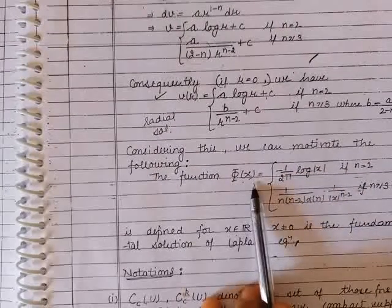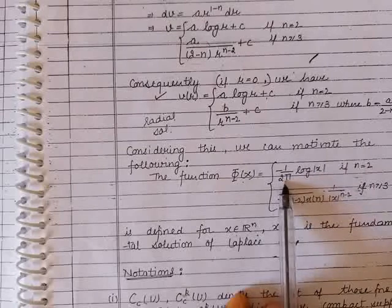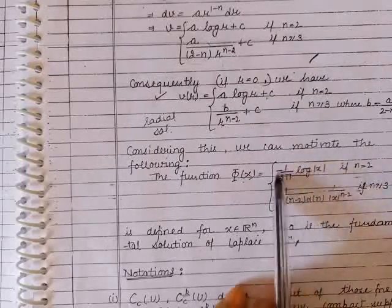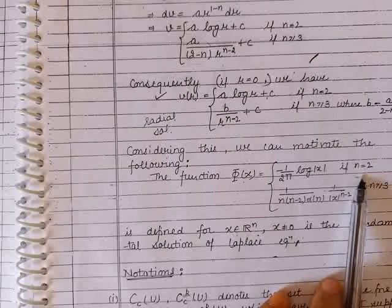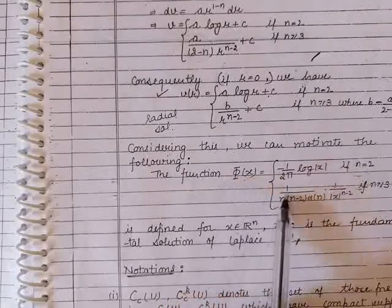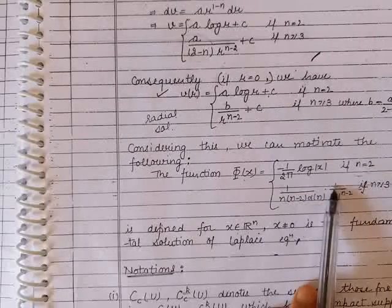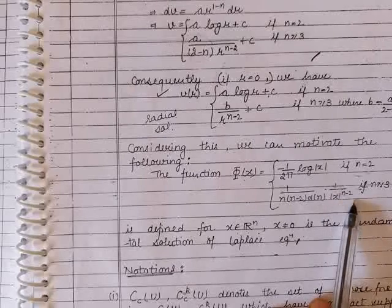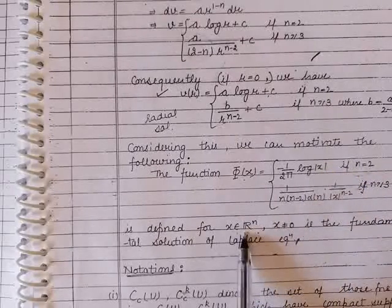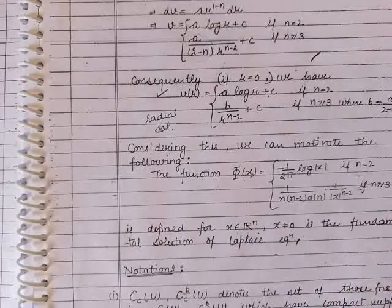The fundamental solution of Laplace equation is defined by: φ(x) = −(1/2π)·log|x| for n = 2, and φ(x) = 1/(n(n−2)αₙ)·1/|x|^(n−2) for n ≥ 3. This function is defined for every x ∈ ℝⁿ with x ≠ 0. This completes the topic of the fundamental solution of Laplace equation.